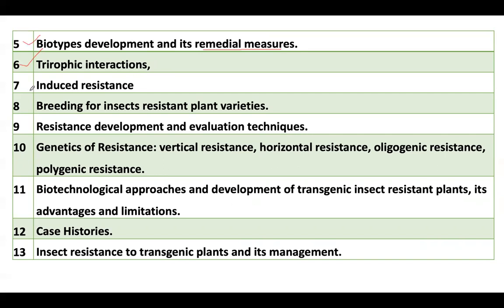The next topic is tritrophic interaction, which deals with the interaction between plant, insect, and natural enemy. Then comes induced resistance — this is not a heritable or innate characteristic of the plant; it is induced by external factors. For example, applying potassium fertilizer can provide resistance to the plant against disease and pests.